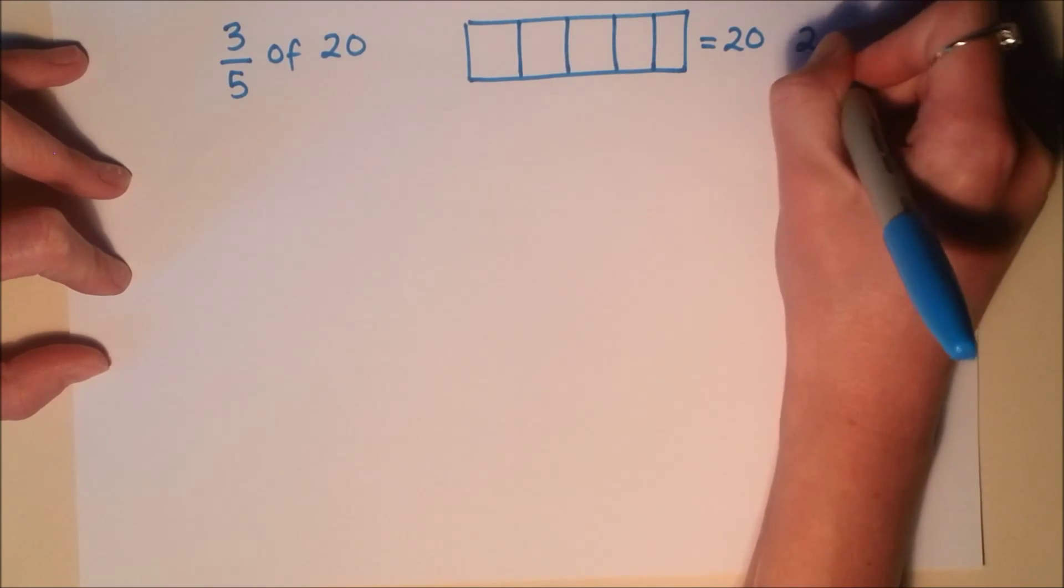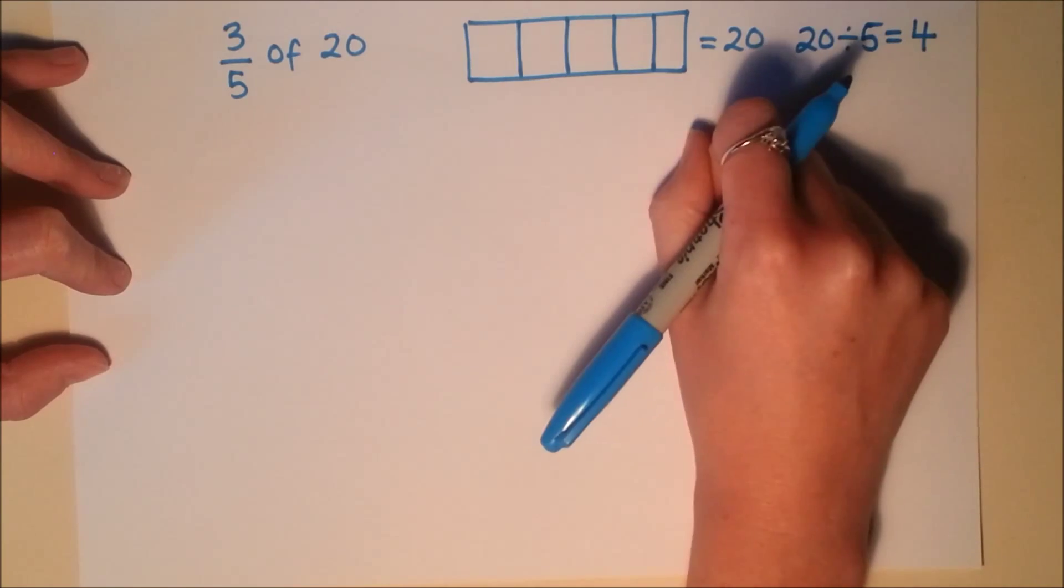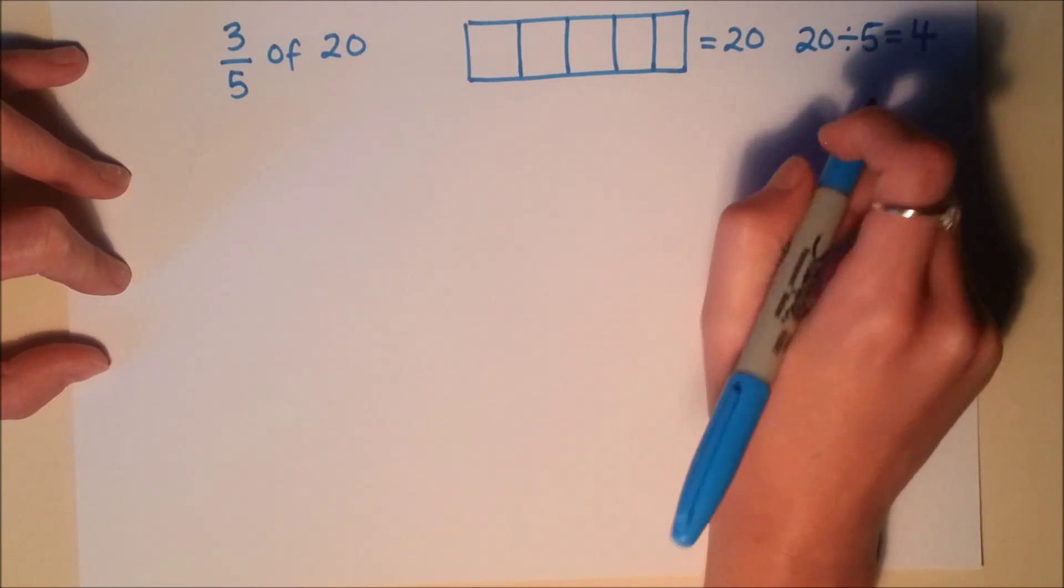Because I split into 5 equal pieces, I need to work out what each one of these is worth. So I'm going to do 20 divided by 5. So from times tables, that's 4. But if you're not sure, count up 5, 10, 15, 20. So 4 lots.